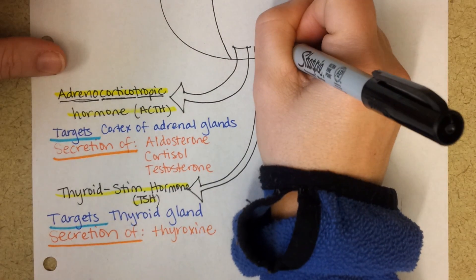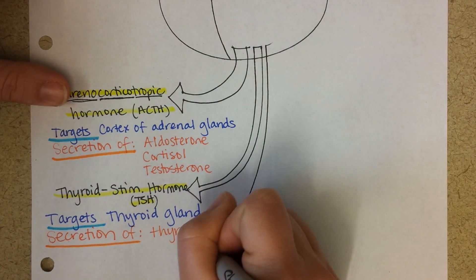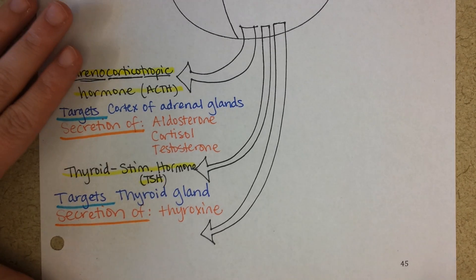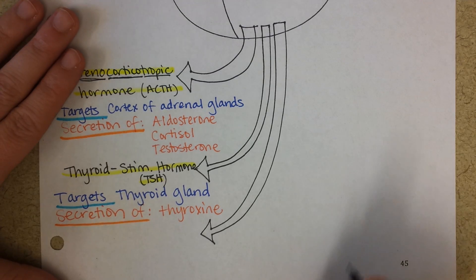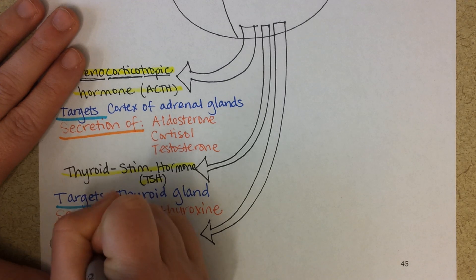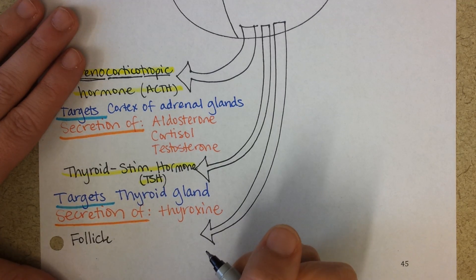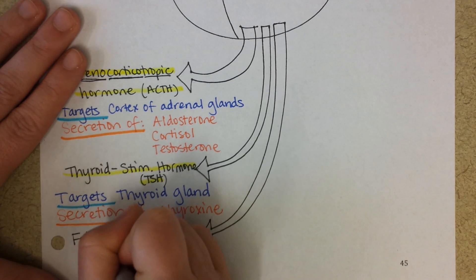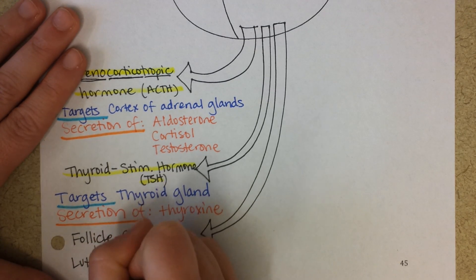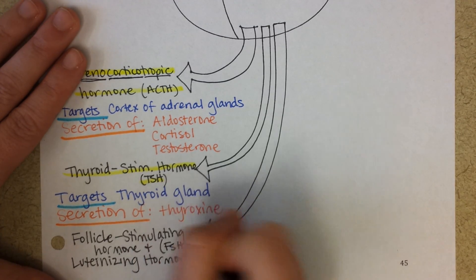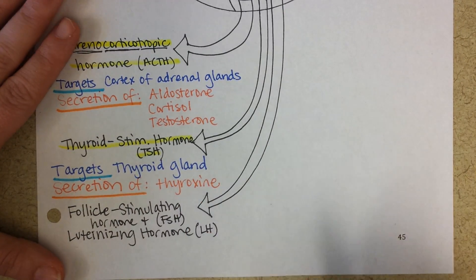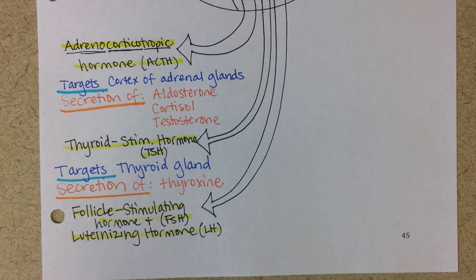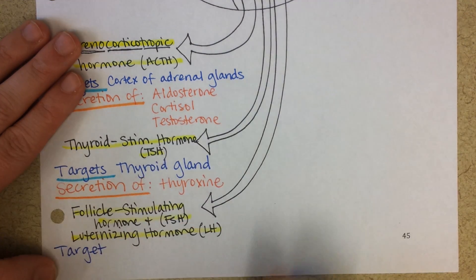The third and fourth hormones are follicle-stimulating hormone and luteinizing hormone — FSH and LH. Both of these target the ovaries and testes, so they target the gonads, and they cause secretion of sex hormones such as testosterone or estrogen.